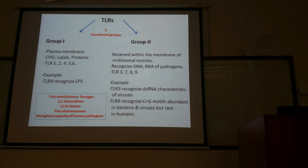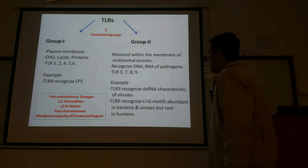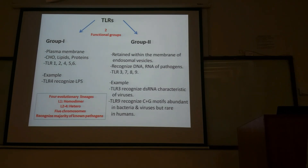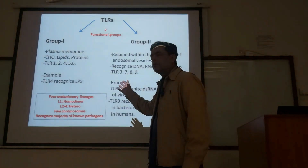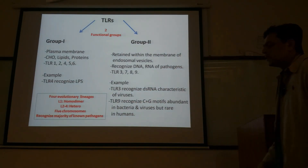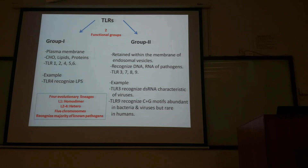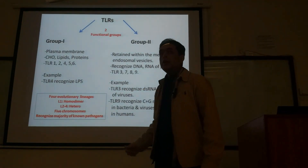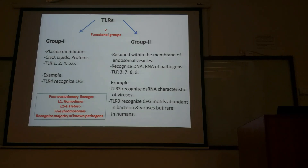Today we have to discuss toll-like receptors, the functional groups in toll-like receptors and different evolutionary lineages. We also have to discuss septic shock. As mentioned in the previous lecture, there are 10 genes coding for peptides that are expressed either on the surface of the cells or inside the cells. These receptors are not only found as part of the plasma membrane but are also endosomal — present inside the cell.